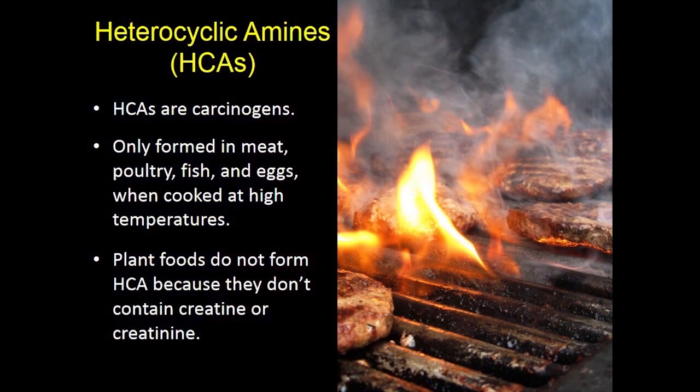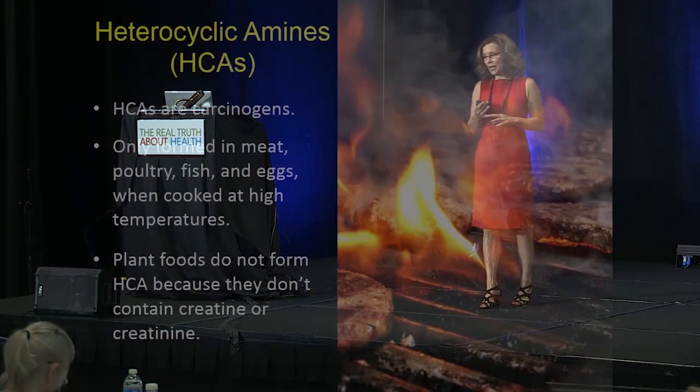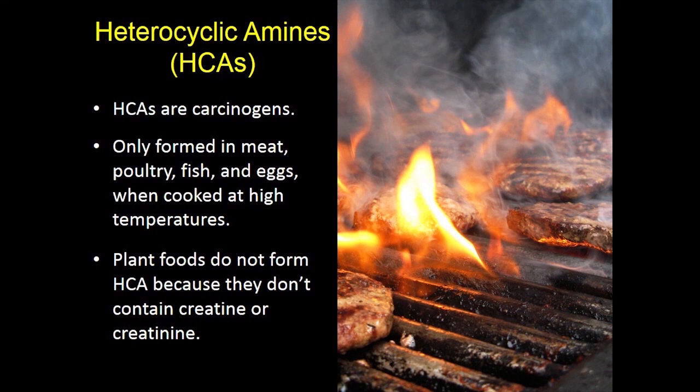Products of high-temperature cooking include heterocyclic amines, which are carcinogens — listed as such by the NIH in 2005. They are formed in meat, poultry, fish, and eggs when cooked at high temperature. They are not formed in plants because you need creatine or creatinine to form heterocyclic amines, and plants don't contain these, so vegetarians don't get any heterocyclic amines.